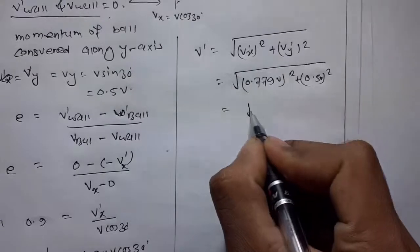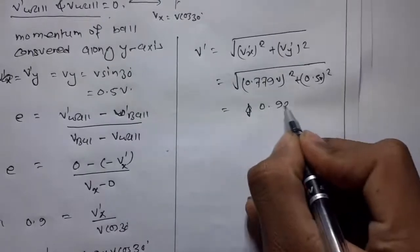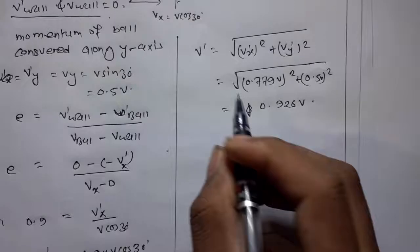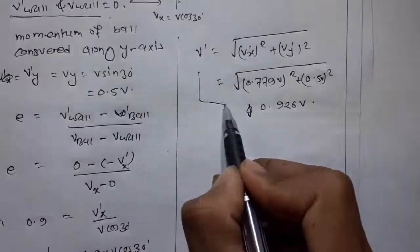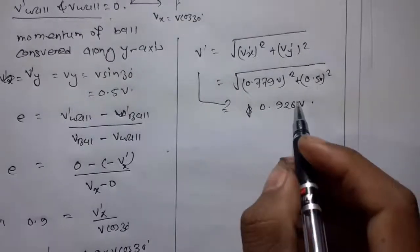This is 0.926 v. So the final velocity of the ball is 0.926 v.